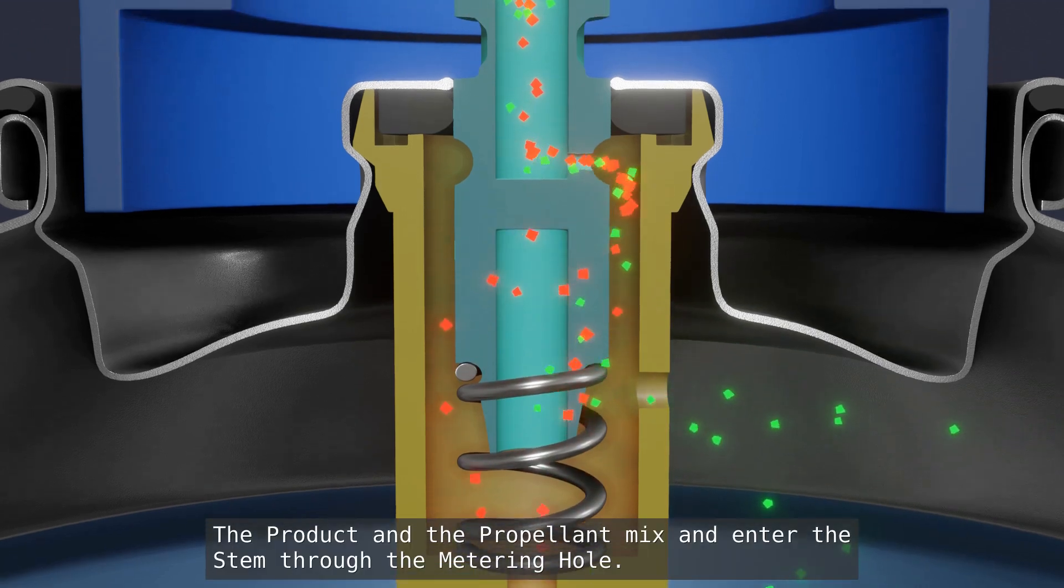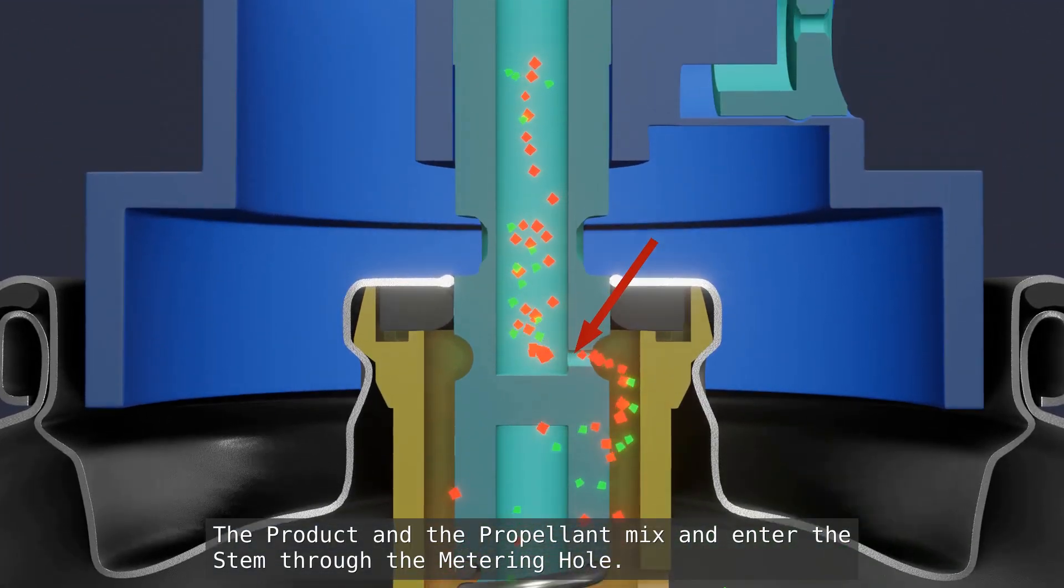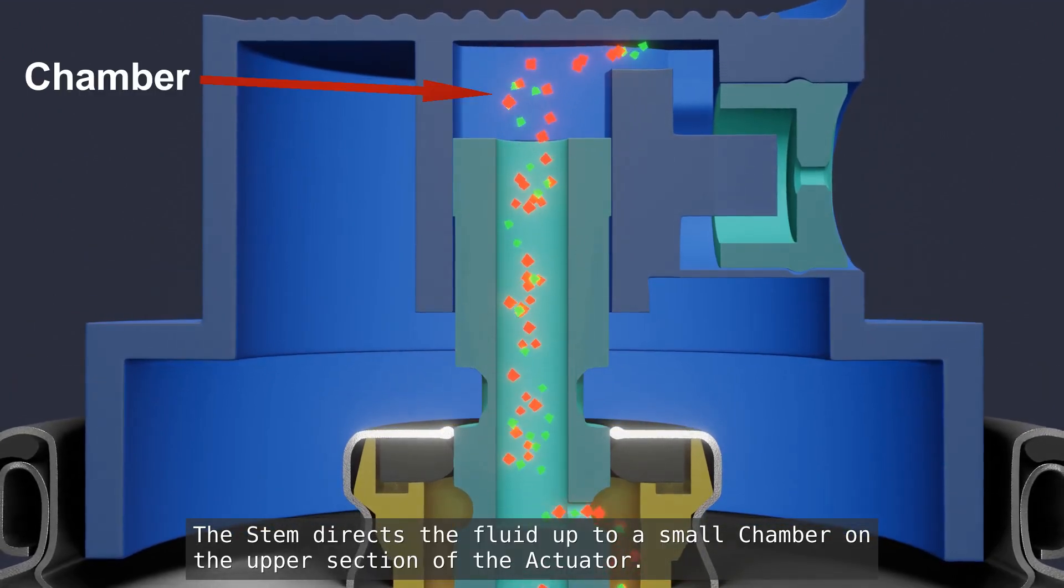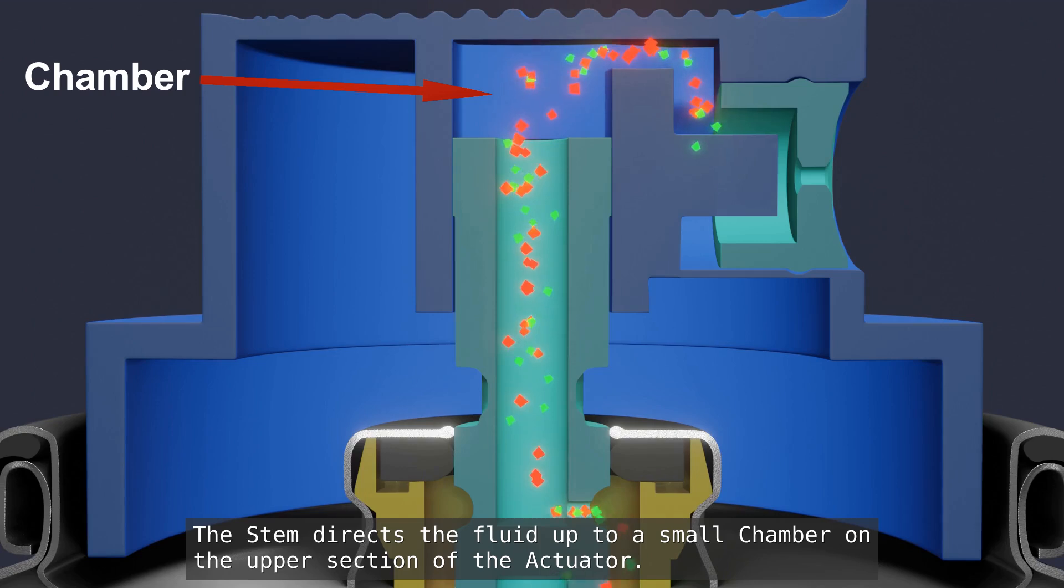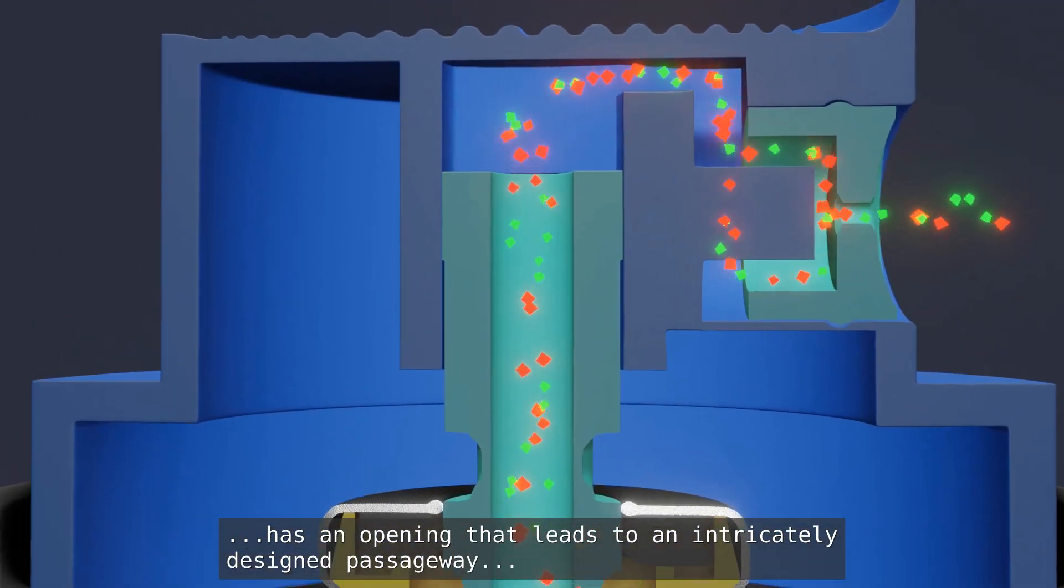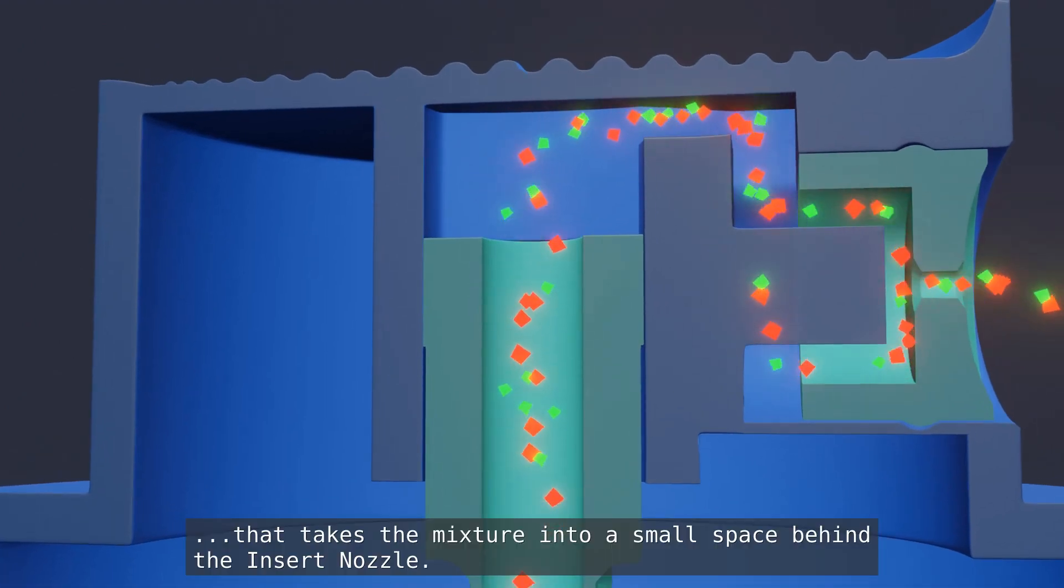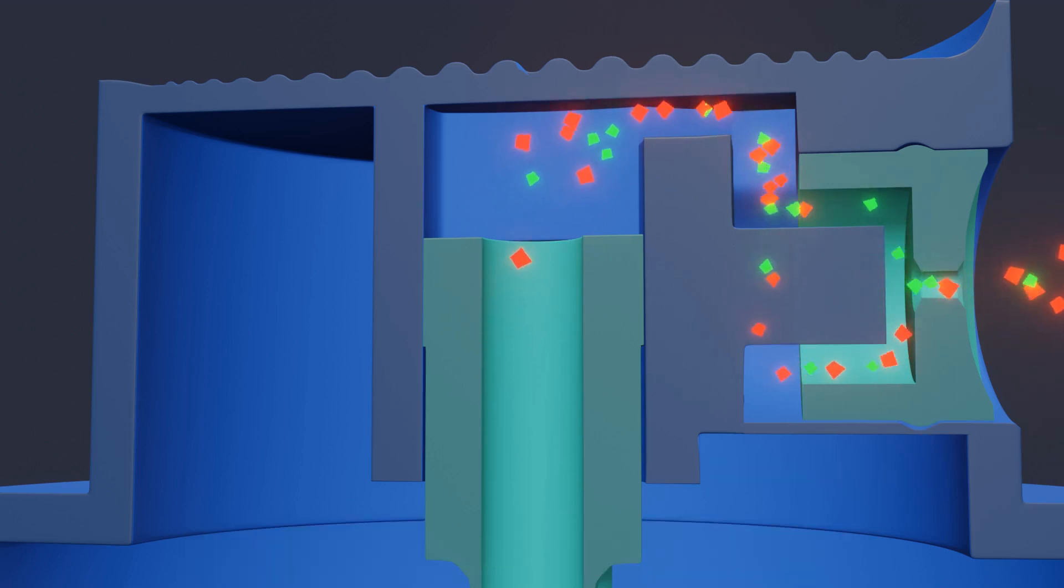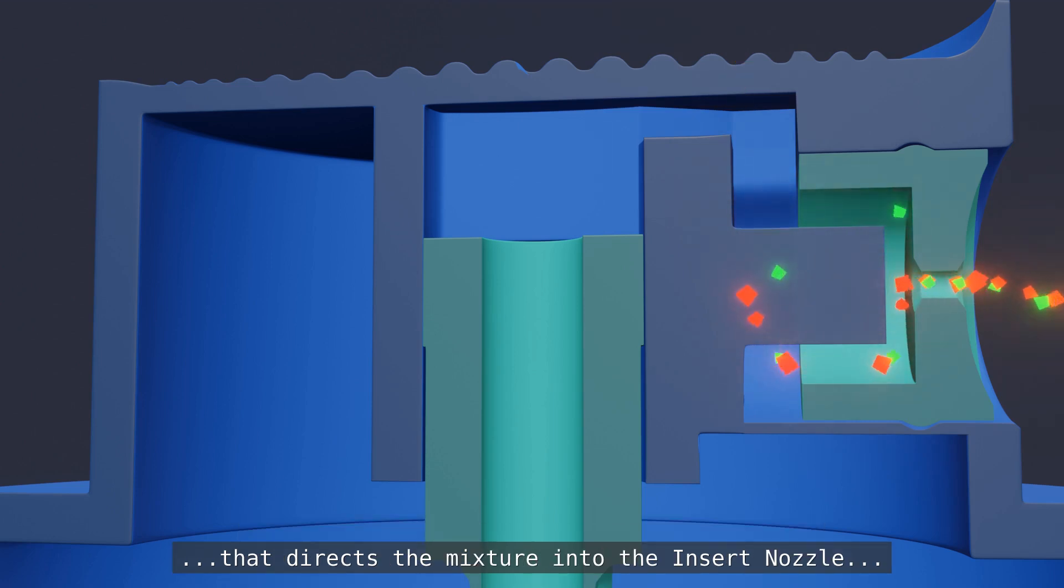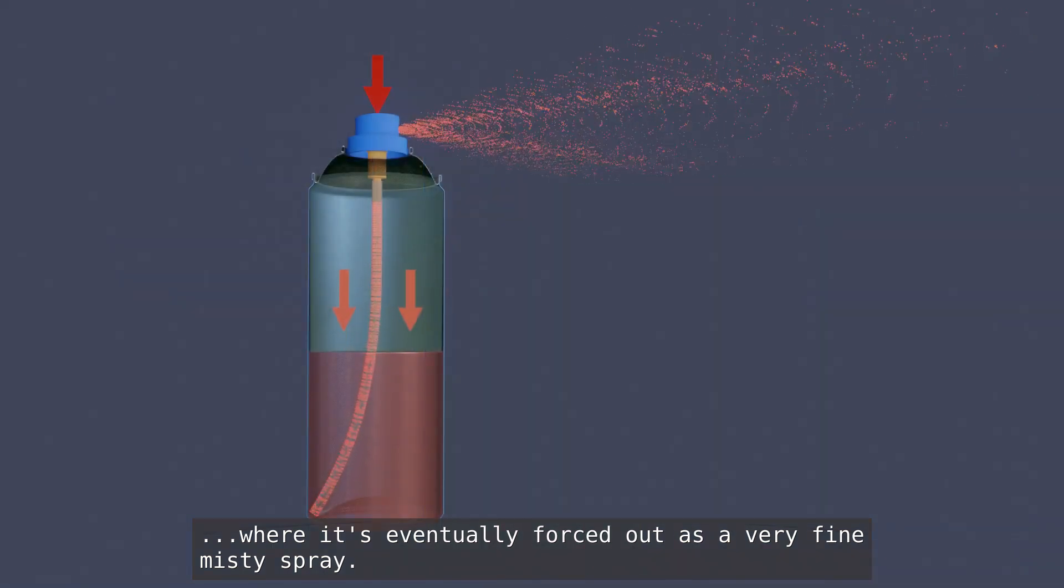The product and the propellant mix and enter the stem through the metering hole. The stem directs the fluid up to a small chamber on the upper section of the actuator. This chamber has an opening that leads to an intricately designed passageway that takes the mixture into a small space behind the inset nozzle. From here, a narrow circular channel is created by a protruding little shaft that directs the mixture into the inset nozzle where it's eventually forced out as a very fine misty spray.